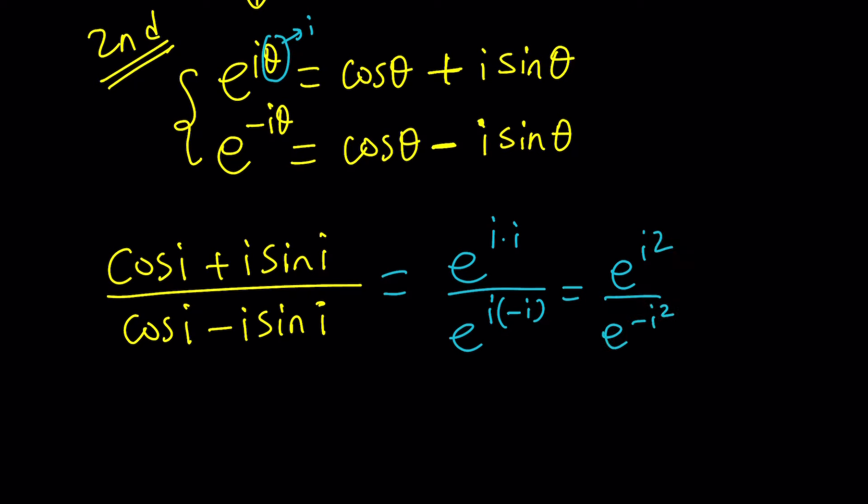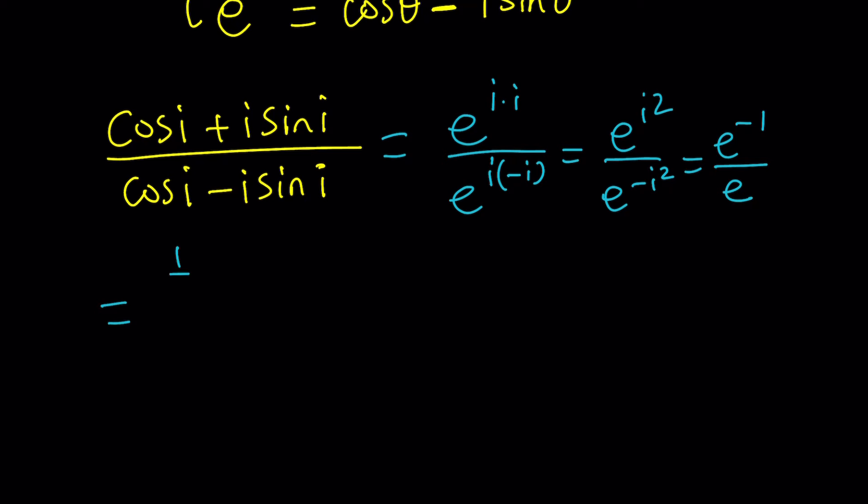And this is e to the i squared divided by e to the negative i squared. Remember, i squared is negative 1, and negative i squared is positive 1. So you get e to the power of negative 1 divided by e, which means 1 over e divided by e, which means 1 over e times 1 over e, which means 1 over e squared as before.